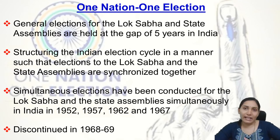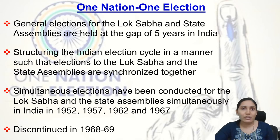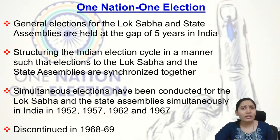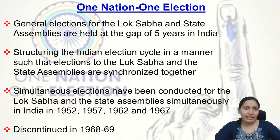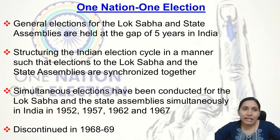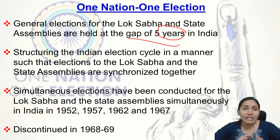Now let's move to One Nation One Election. Electoral roll means the list of people eligible for voting — all adult members of a particular place are mentioned in the electoral roll. General elections to the Lok Sabha and State Assembly elections are held every five years each, but they do not happen at the same time. For example, a state assembly election may be held in 2022 while Lok Sabha elections are held in 2024.